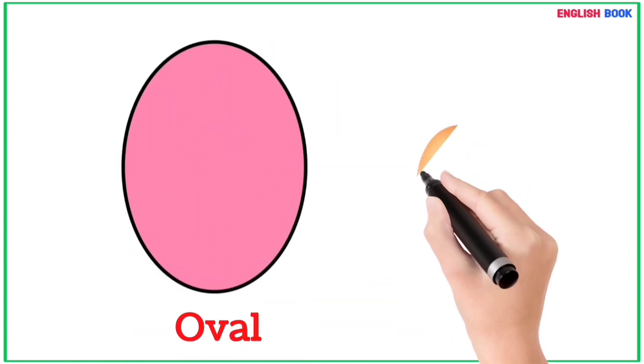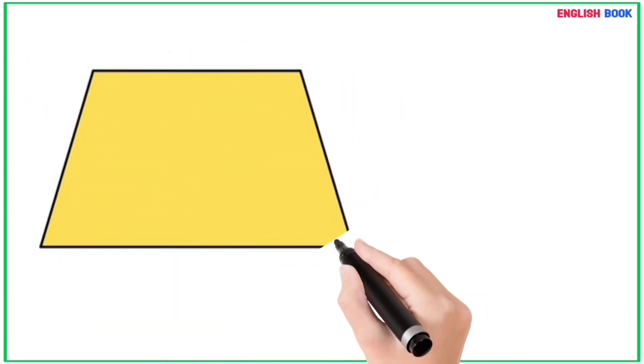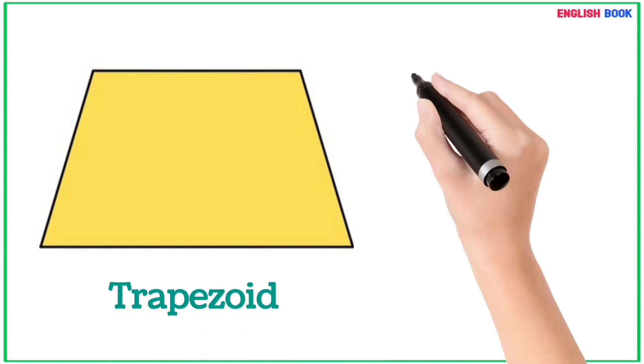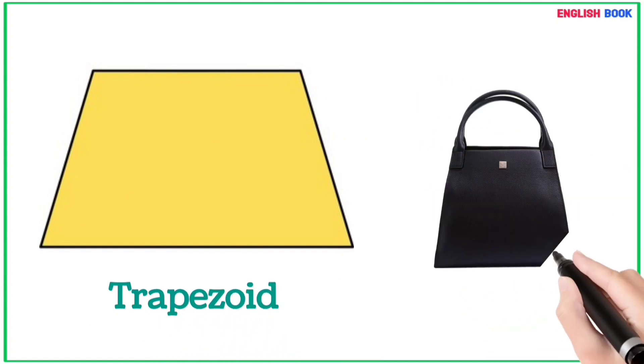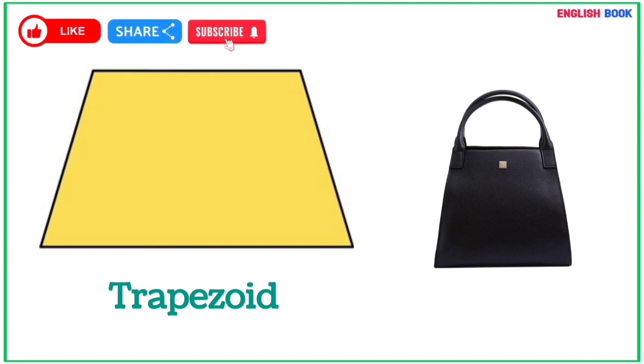Oval - egg is an oval shape object. Trapezoid - this lady purse is trapezoid.